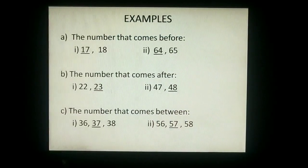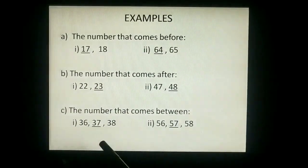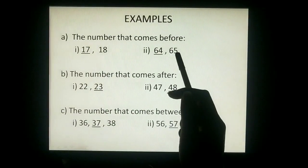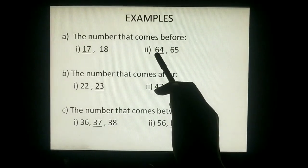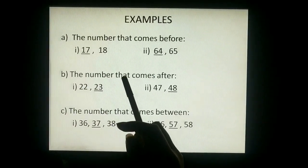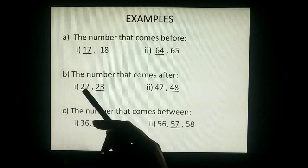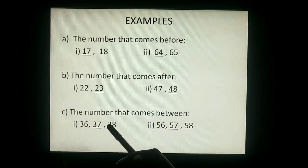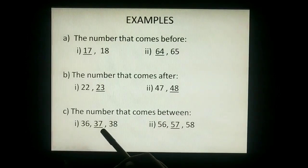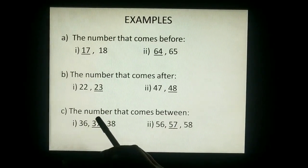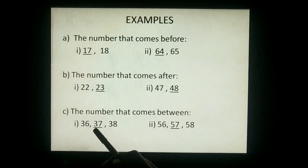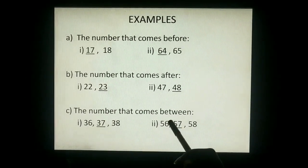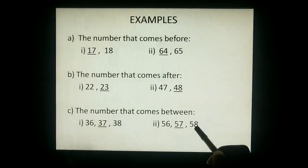It is related to some examples. The number that comes before. The number that comes after: 47, so 48. The number that comes between: 36 and 38 is between 37 — so 37 comes between 36 and 38. And 56 and 58 is between 57 — so 57 comes between 56 and 58.